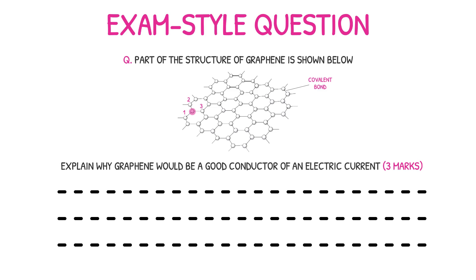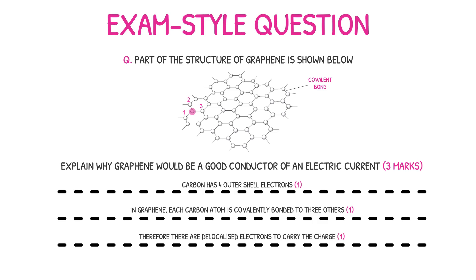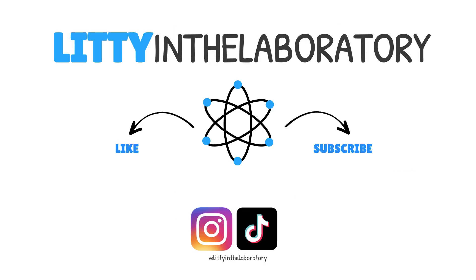To achieve our marks on this question: the first mark is awarded for mentioning that carbon has four electrons in its outer shell; the second mark is awarded for stating that in graphene, each carbon atom is only covalently bonded to three others; and the final mark is awarded for indicating that there are delocalised electrons in graphene that are free to carry the electrical charge. How did you do on this question? Let me know in the comment section below. Anyway, that's it for this video guys — thank you for joining me in the laboratory. Please leave a like if you found it useful and don't forget to subscribe so that you don't miss another one. See you soon!